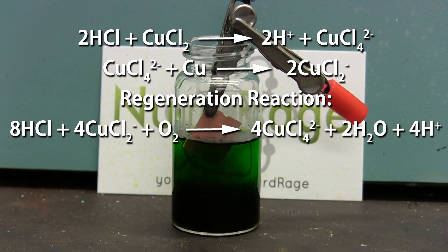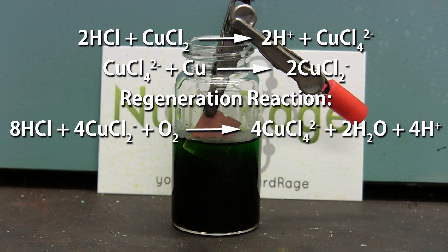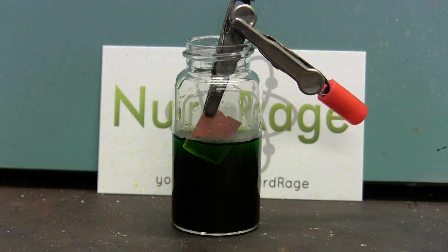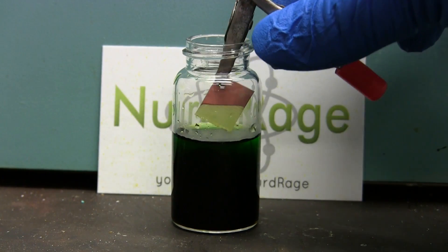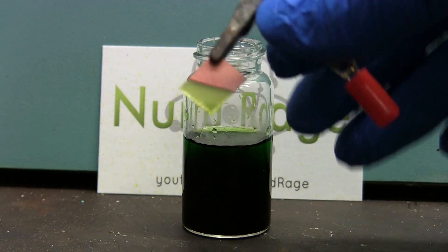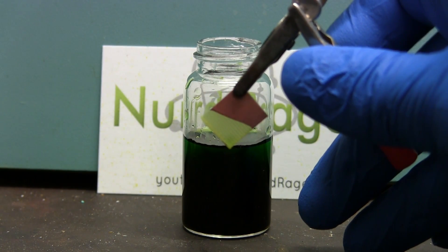The great advantage of this etchant is that it can easily be regenerated by bubbling in air. In fact in storage it not only lasts indefinitely but actually regains strength as it absorbs air. So it's even easier to recycle than the sulfuric acid based etchants. I'll do a whole video on the chemistry of copper chloride etchants so to keep this video short I'll stop here.